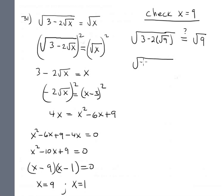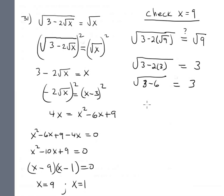Checking x equals 9: square root of 3 minus 2 times 3 should equal 3, since square root of 9 is 3. But 2 times 3 is 6, and 3 minus 6 gives a negative under the radical — this is completely false. The solution x equals 9 is extraneous.